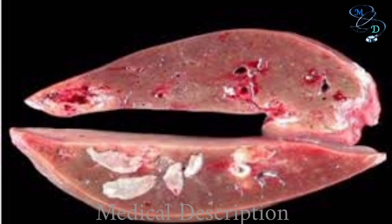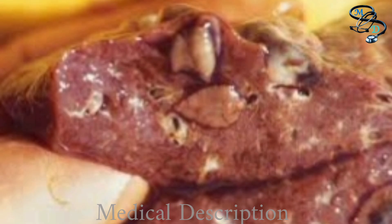We have covered two infections — Opisthorchis, Clonorchis, and Fasciola types of liver flukes in our discussion. That was all about the parasite liver flukes. I hope this video has been very informative for you.